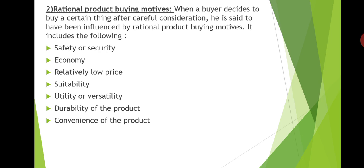Next, rational product buying motive. When a buyer decides to buy a certain thing after careful consideration — that is, after thinking over the matter consciously and logically — he is said to have been influenced by rational product buying motive. Rational product buying motives include the following: safety and security, economy, relatively low price, suitability, utility or versatility, durability of the product, and convenience of the product.